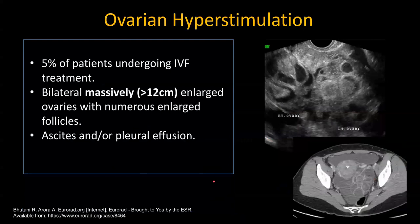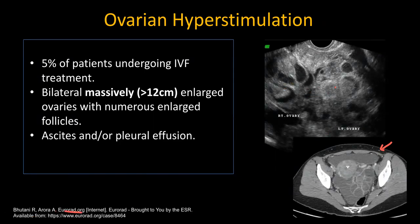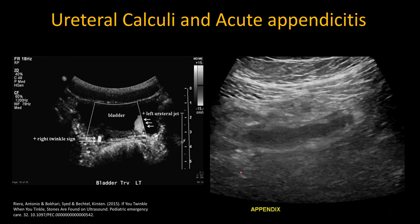Ovarian hyperstimulation is usually seen in patients undergoing IVF — both ovaries would be massively enlarged, more than 12 centimeters, and there will be free fluid in the abdomen and bilateral effusions. On CT, you can appreciate how bulky the ovaries are with surrounding free fluid, which are the key signs of ovarian hyperstimulation.